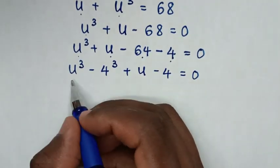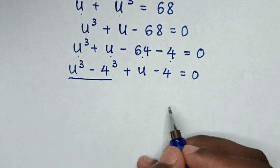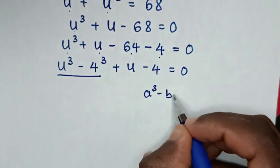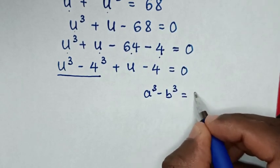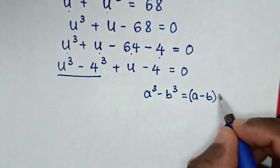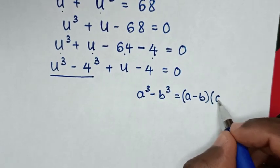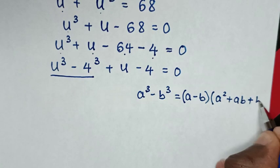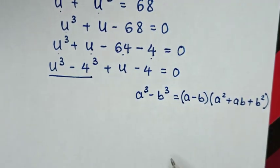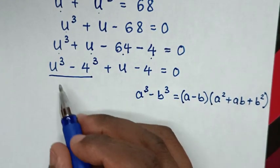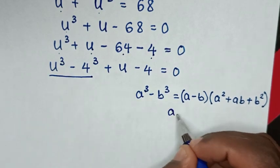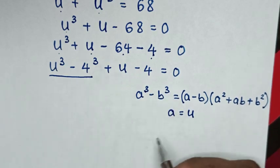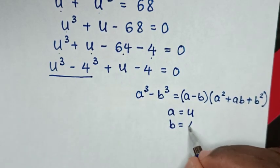From this part of our equation, u power 3 minus 4 power 3 is in the form of a power 3 minus b power 3, which is equal to a minus b, bracket times a squared plus ab plus b squared, bracket. When you compare a power 3 with u power 3, so a is equal to u; and when you compare b power 3 with 4 power 3, so b is equal to 4.